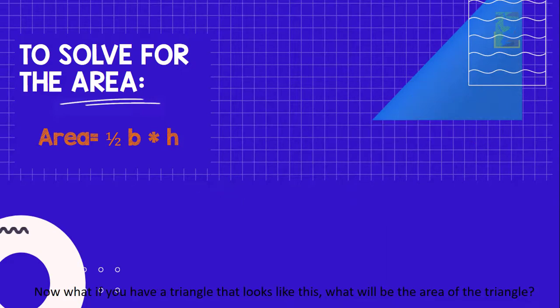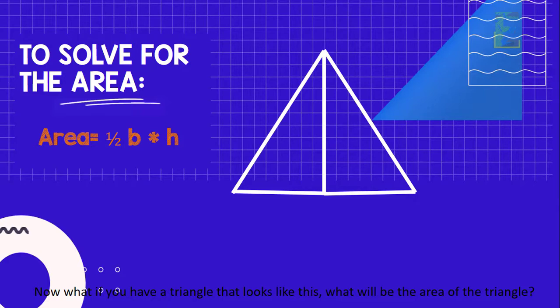Now what if you have a triangle that looks like this? What will be the area of the triangle? We can use the formula 1 half base times height in finding the area of any triangle. So for this problem, the height of the triangle is 10 cm.